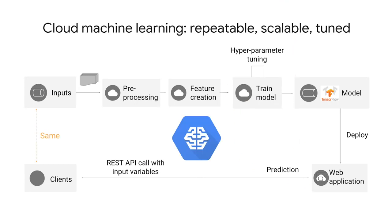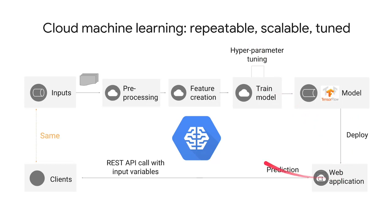Cloud ML Engine gives you the ability to carry out machine learning that is repeatable, scalable, and tuned. Repeatable? You need a machine learning framework that helps you handle training-serving skew. The use of TensorFlow Transform, for example, simplifies the bookkeeping in several common situations. It's scalable — Cloud ML will help you distribute the preprocessing and training of your model and deploy your trained model to the cloud. This is important because you need high-quality execution both during training and at prediction time. And, of course, you can use Cloud ML Engine to do hyperparameter tuning.